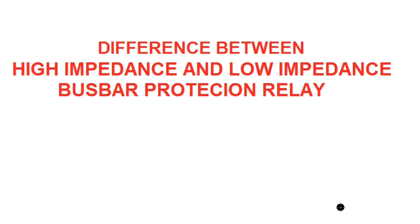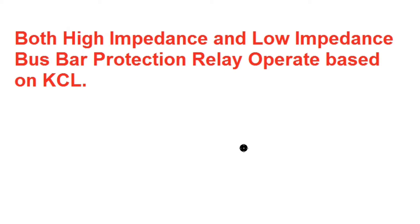Hello friends, today I will discuss the difference between high impedance and low impedance bus bar protection relay. Both the high impedance and low impedance bus bar protection relay operate based on KCL, that is Kirchhoff's current law. So current entering a node and leaving the node sums to zero. During normal condition, the summation of current entering and leaving for a particular bus will be zero.